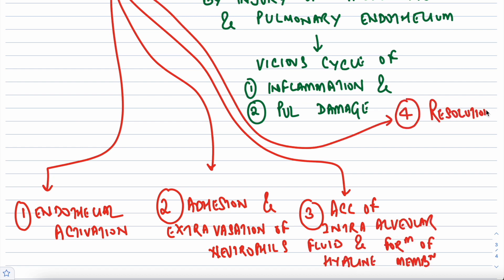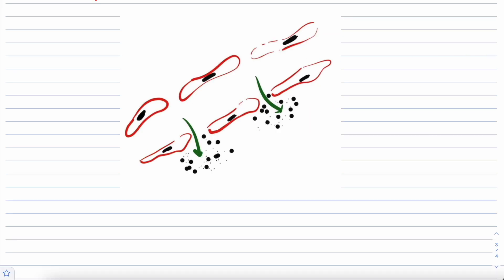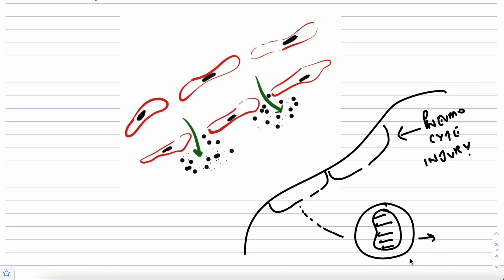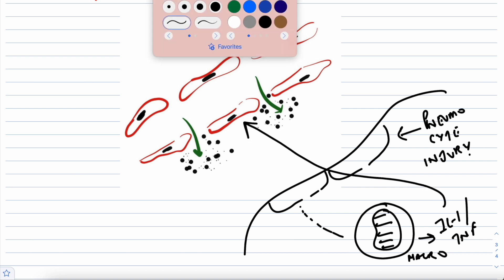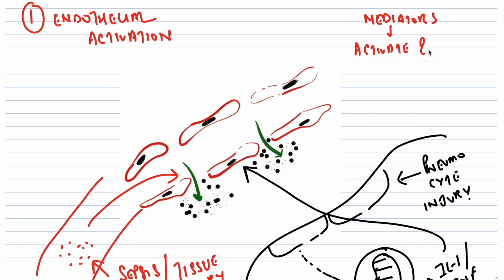The first pathogenetic event is endothelial activation. Endothelial activation occurs secondary to pneumocyte injury, sensed by the resident alveolar macrophage which secretes mediators such as tumor necrosis factor and interleukin-1. Alternatively, the endothelium might be activated by circulating inflammatory mediators released in the setting of sepsis or severe tissue injury.